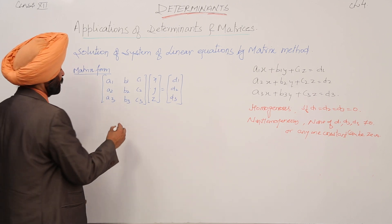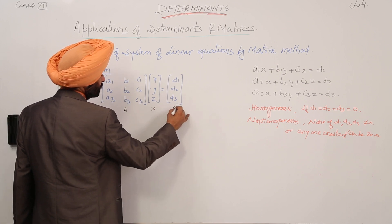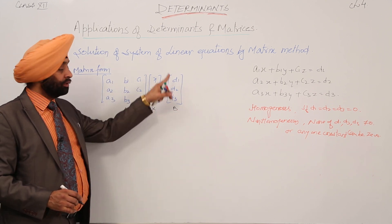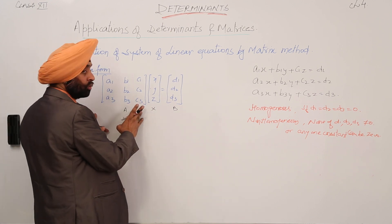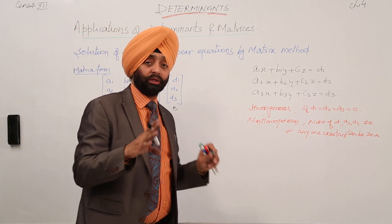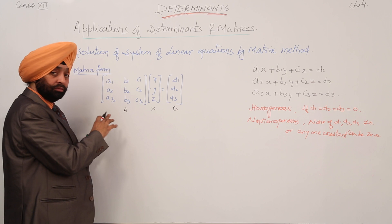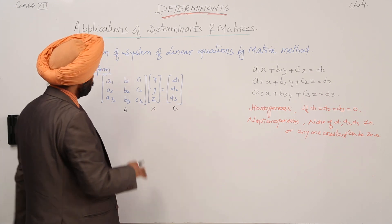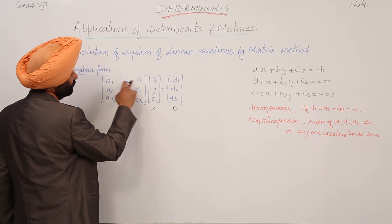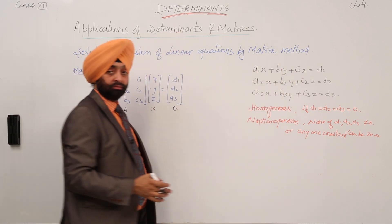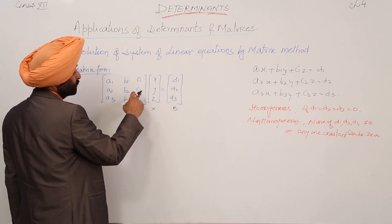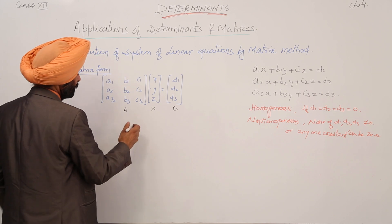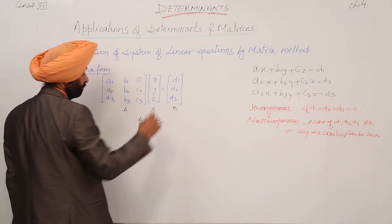These equations can be written as AX = B, where A is a 3×3 matrix of all the coefficients, X is the 3×1 variable matrix, and B is the 3×1 constants matrix. Multiplying a1 with x, b1 with y, c1 with z and adding gives the first equation, and so on for the others.